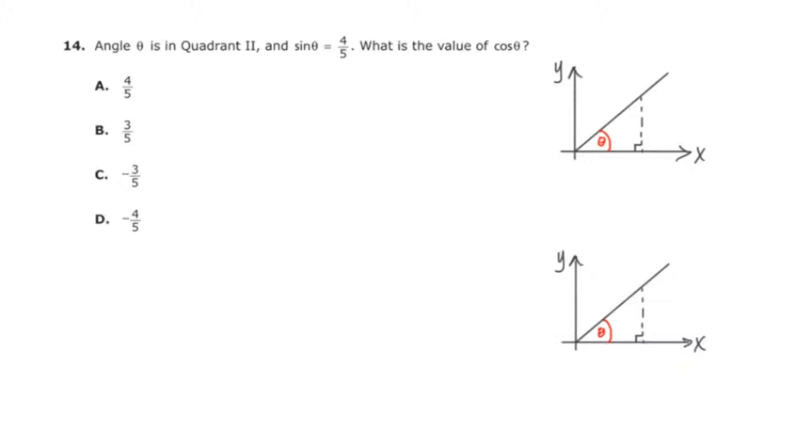Hey there, this is MathCamp321 presenting the solution to question number 14 from the PARC Algebra 2 practice test. And this question says angle theta is in quadrant 2 and the sine of theta is equal to 4 fifths. What is the value of the cosine of theta?